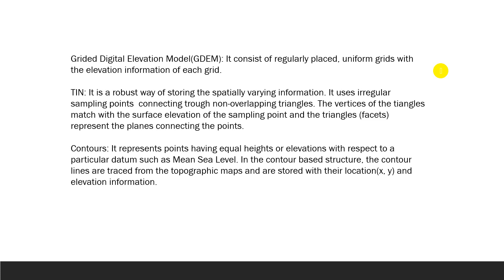TIN, or Triangular Irregular Network, is a robust way of storing spatially varying information. It uses irregular sampling points connected through non-overlapping triangles. The vertices of the triangles match with the surface elevation of the sampling points, and the triangle facets, meaning faces, represent the planes connecting the points.